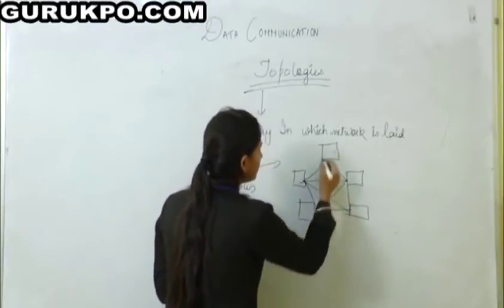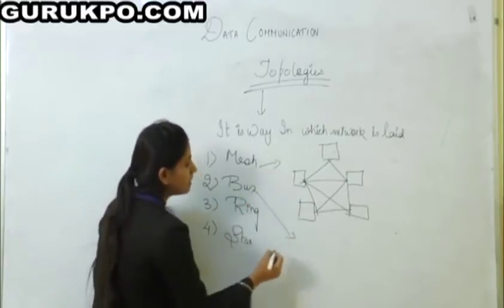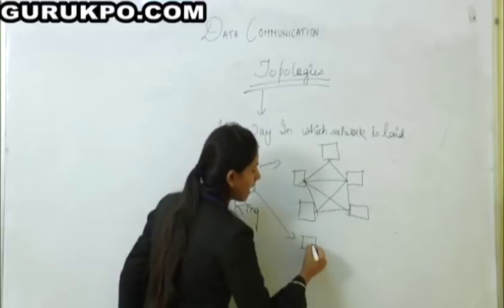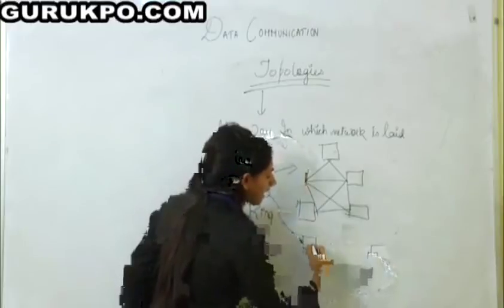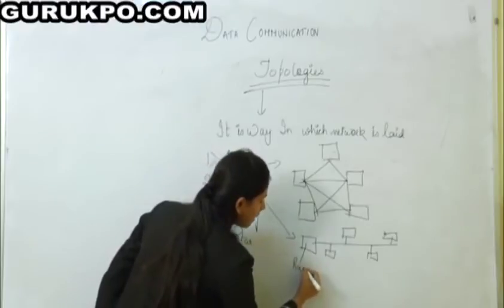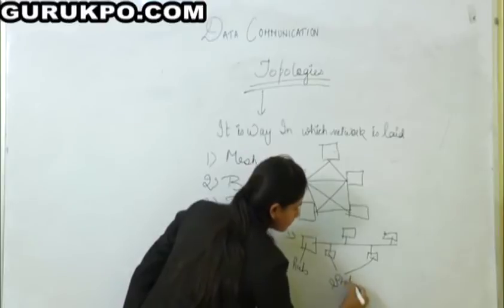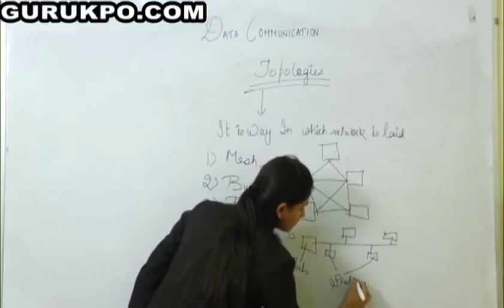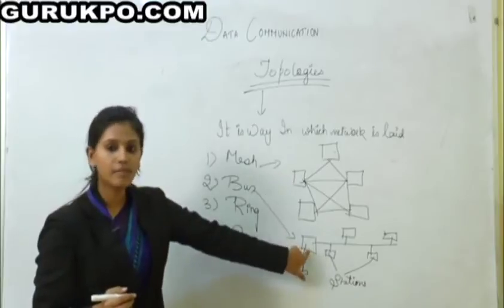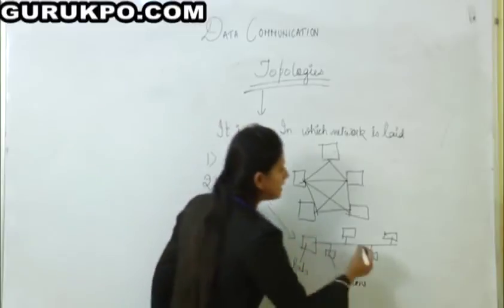In bus topology, there is a single hub. This is the hub and these are the stations. Through the hub, data is transmitted one by one to each station in a linear way.